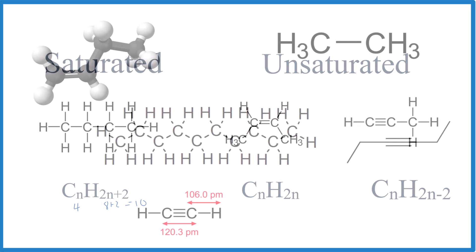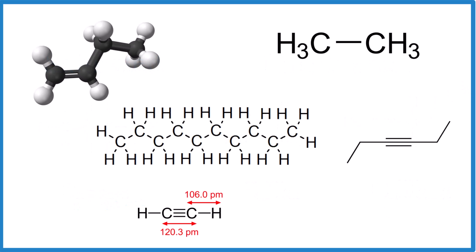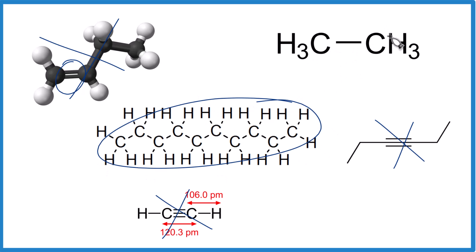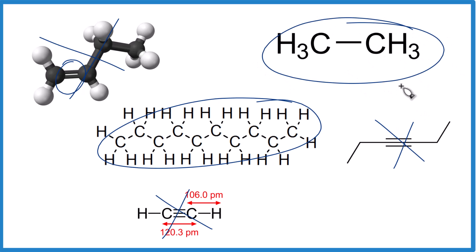Take a moment and try this — identify the two unsaturated hydrocarbons. Here we have a double bond, so we know this is unsaturated. When we see a triple bond, that is also unsaturated. But here, each carbon has four things and it's all single bonds — so this one is saturated. And up here, each carbon has four bonds total — so that one is also saturated.